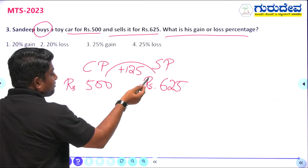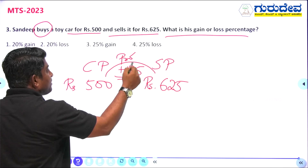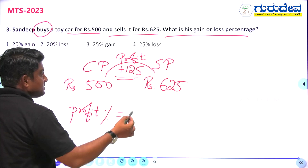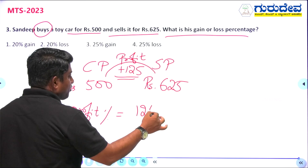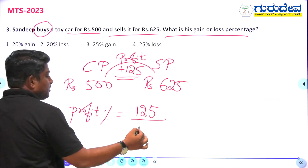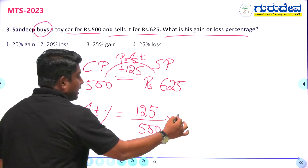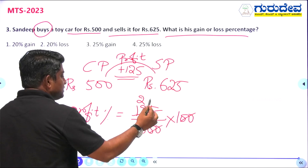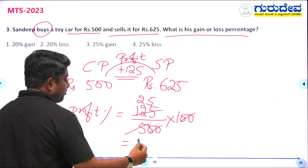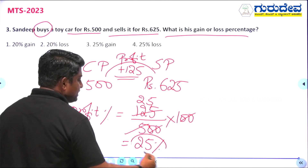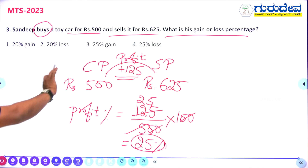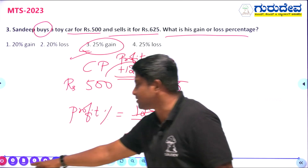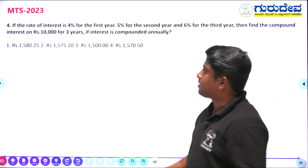The profit is 125 rupees. Profit percentage = (Profit ÷ Cost Price) × 100 = (125 ÷ 500) × 100. The zeros cancel: 125÷5 = 25. So profit percentage is 25%. Option number 3 is the right answer.